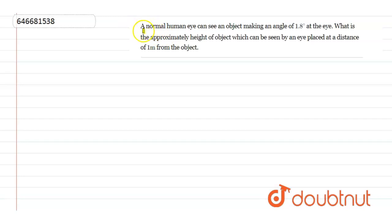A normal human eye can see an object making an angle of 1.8 degrees at the eye. What is the approximately height of object which can be seen by an eye placed at a distance of 1 meter from the object?